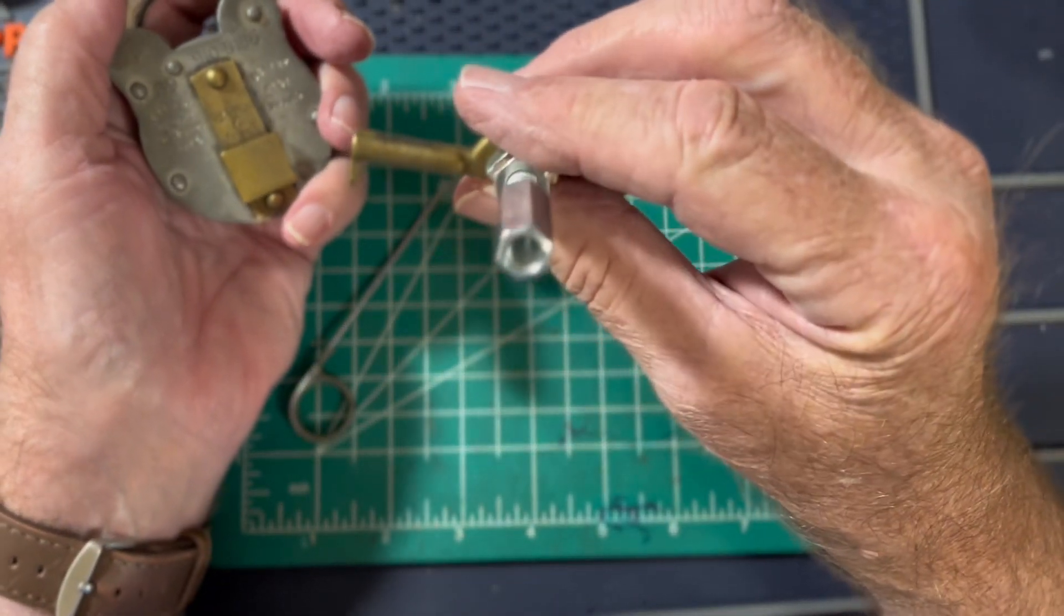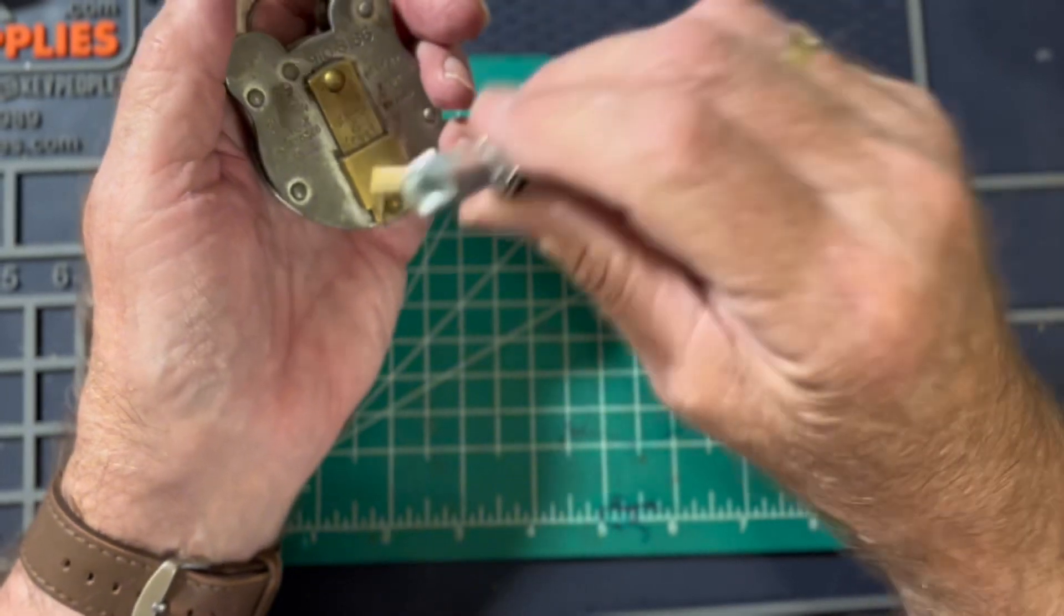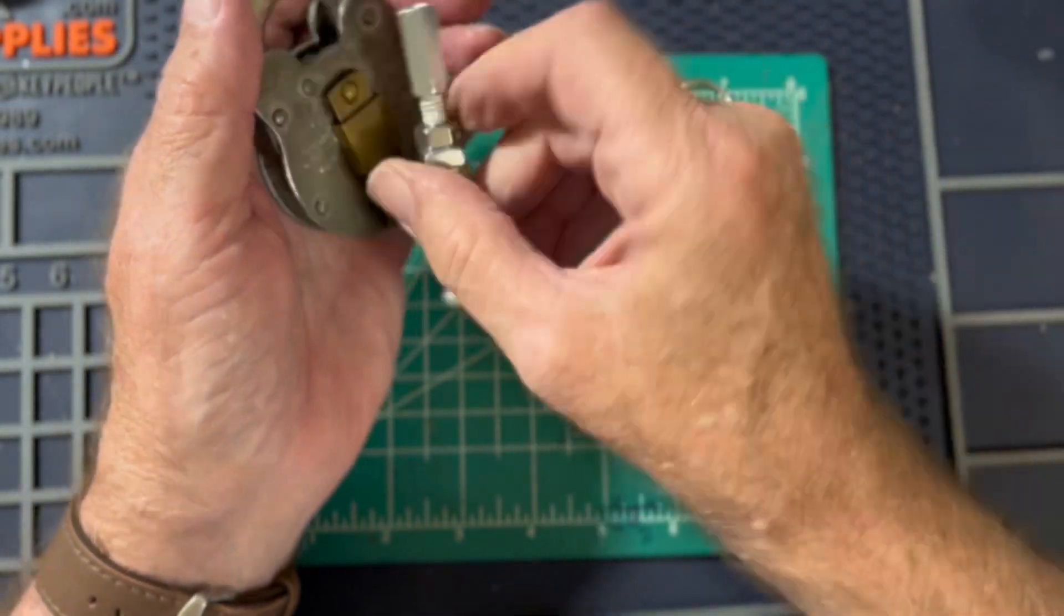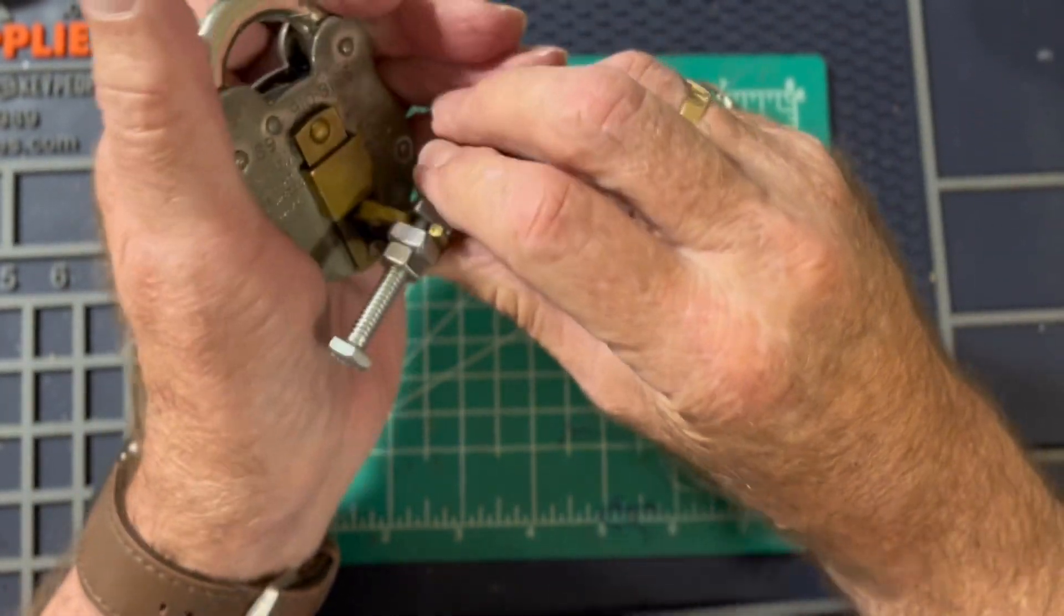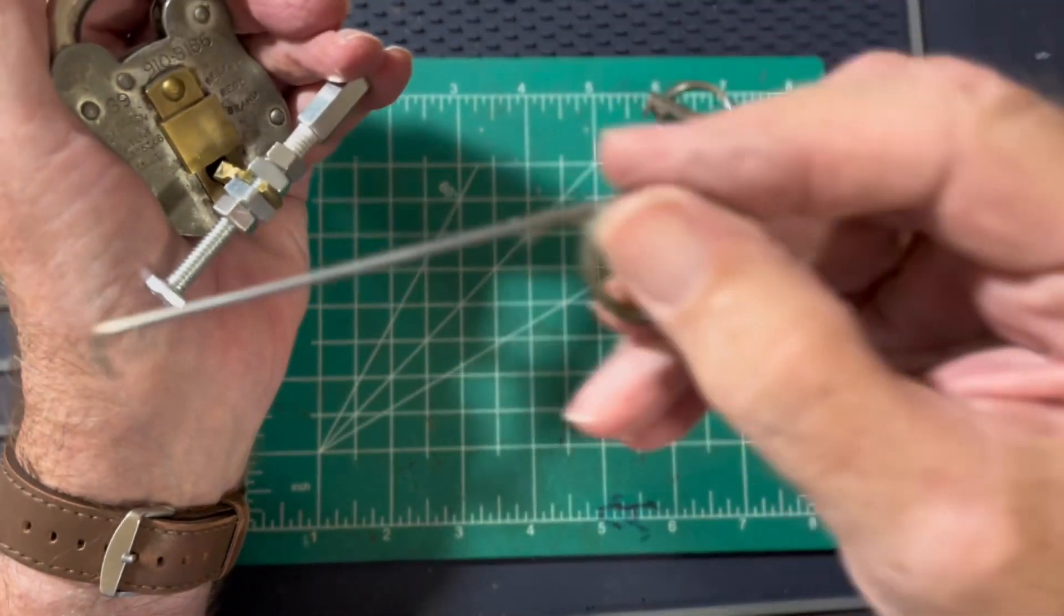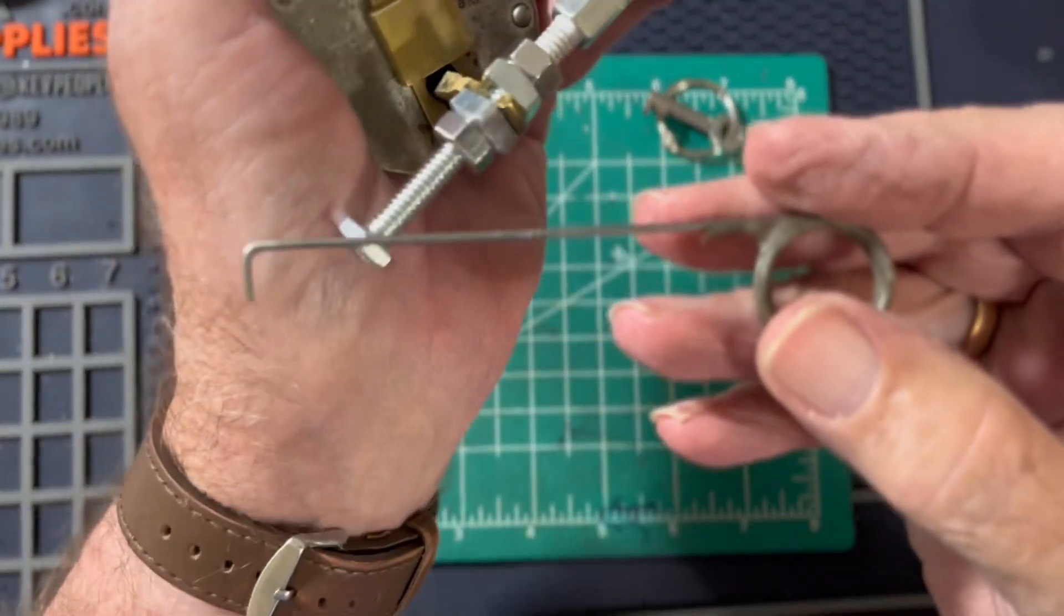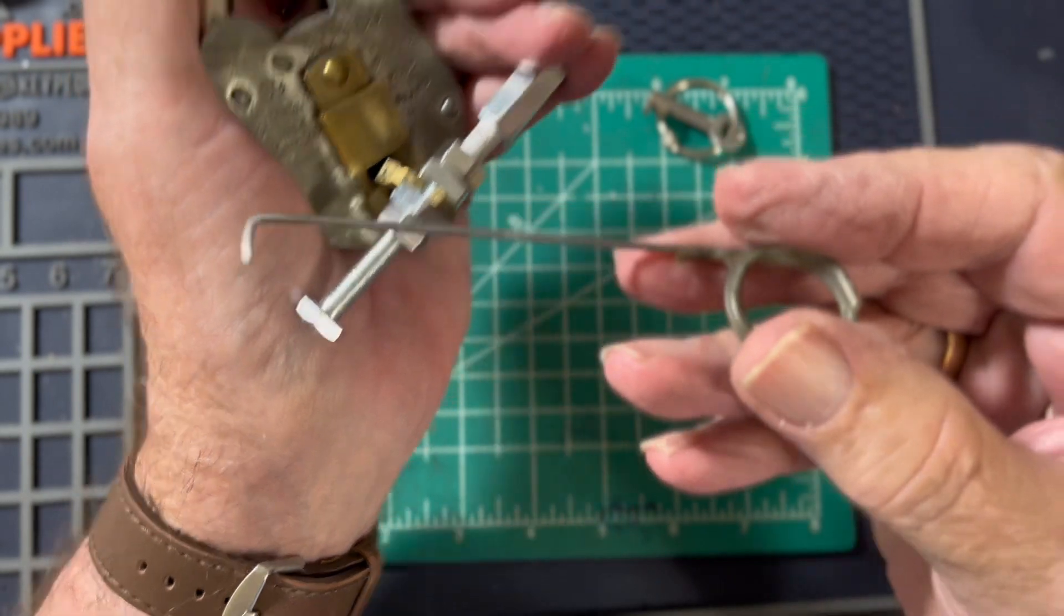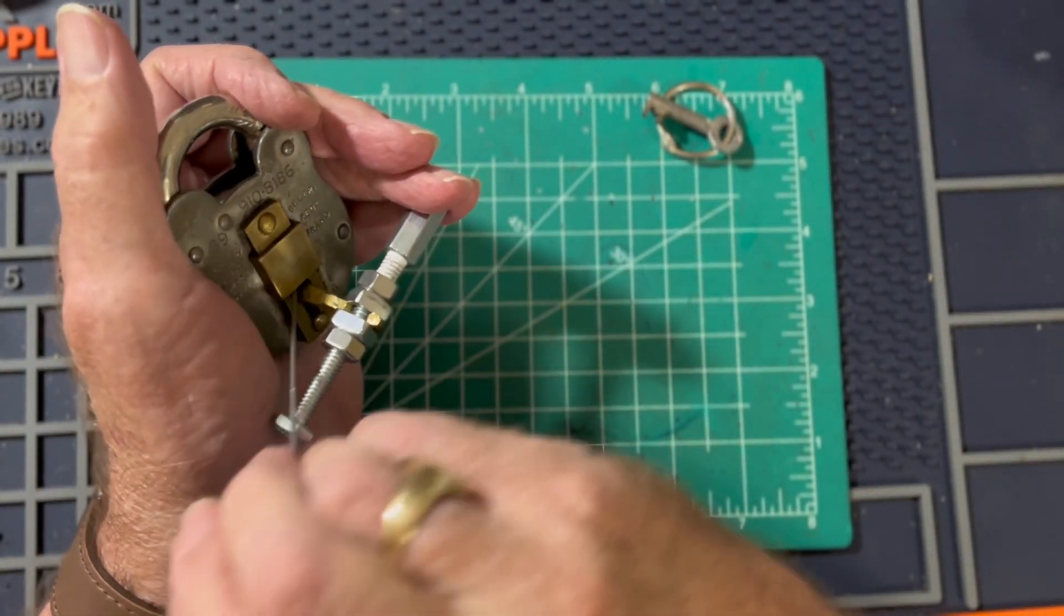Using an old key filed down to make a tension tool that engages the bolt, and a pick wire. And we go in.